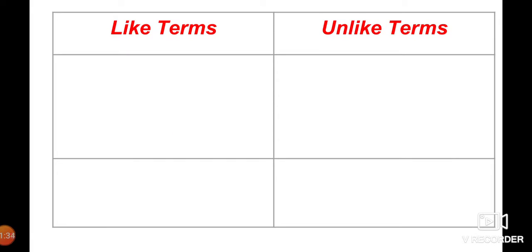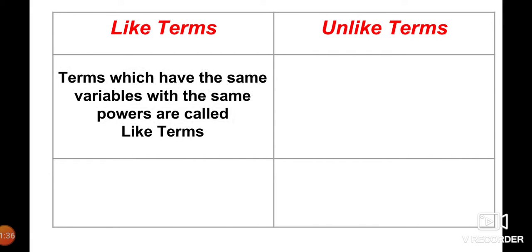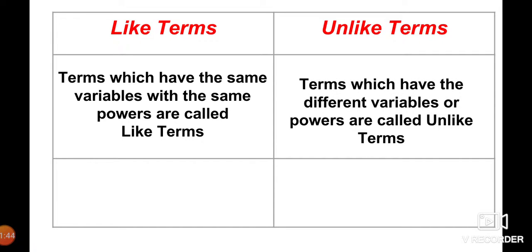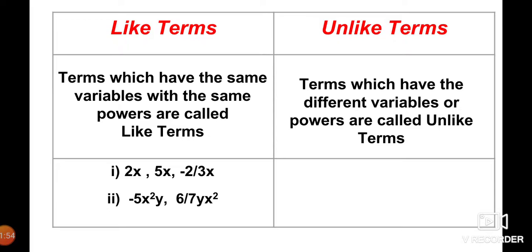Now we will see what are like terms and unlike terms. Terms which have the same variables with the same powers are called like terms, whereas terms which have different variables or different powers are called unlike terms. For example, 2x, 5x, and −(2/3)x are like terms, as x is the common variable.